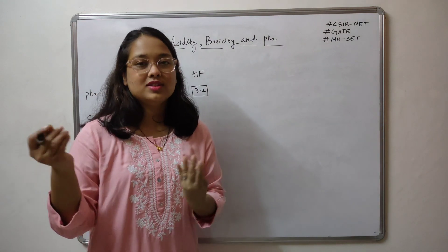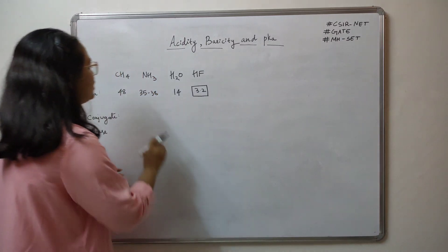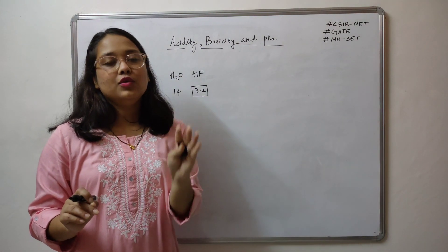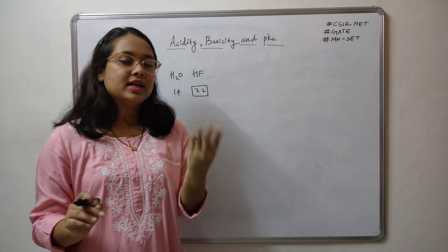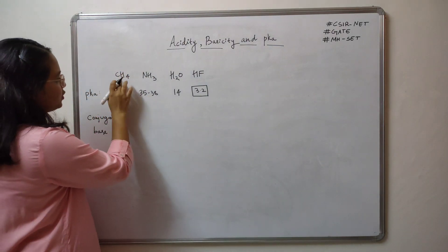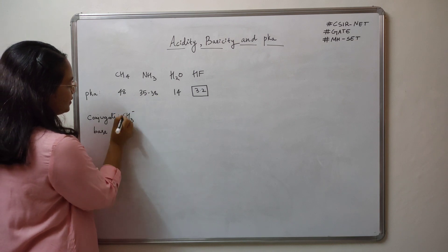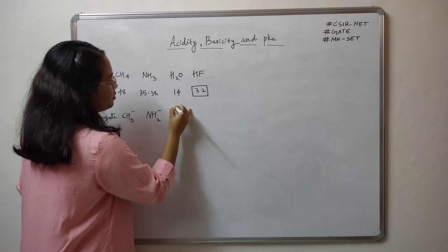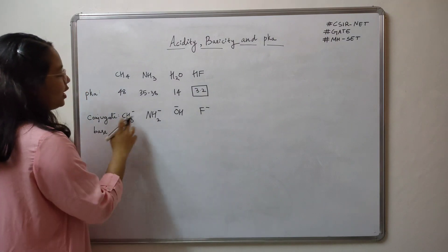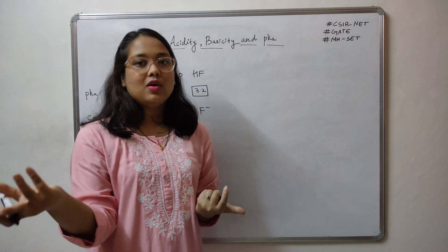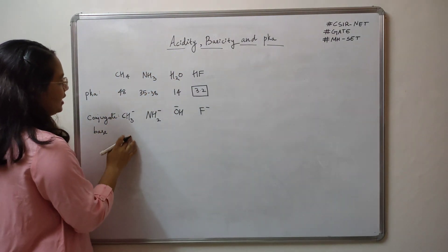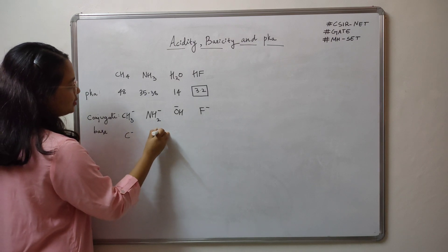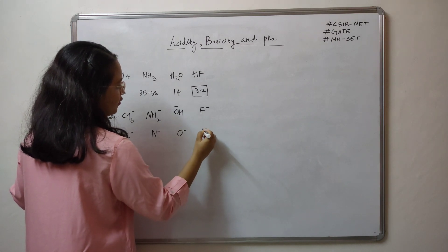If pKa values are not given, how do you identify the strongest acid? Once you have a list of acids, find the conjugate base for each by simply removing a proton. So: CH4 → CH3−, NH3 → NH2−, H2O → OH−, and HF → F−. We get a minus sign because H+ leaves without its electrons, so negative charge increases. The negative charge on CH3− is on carbon, on NH2− it's on nitrogen, on OH− it's on oxygen, and on F− it's on fluorine.